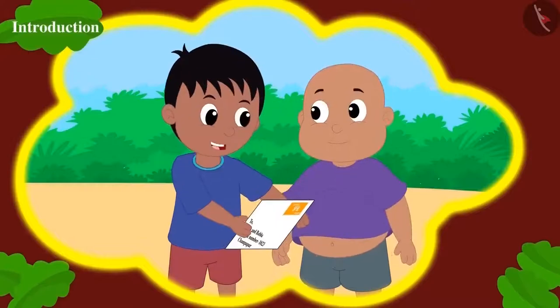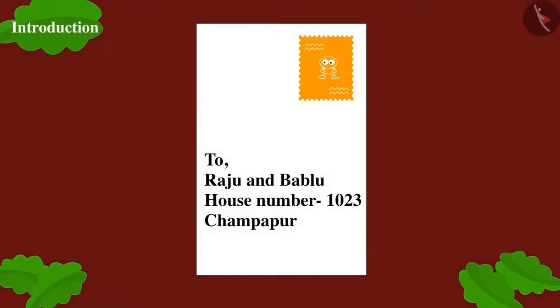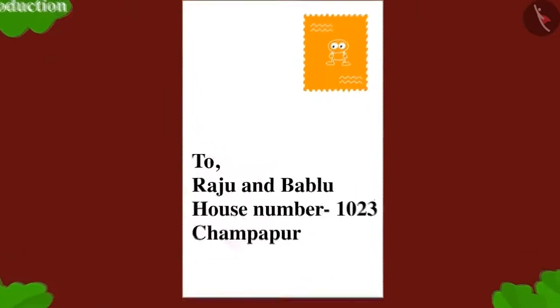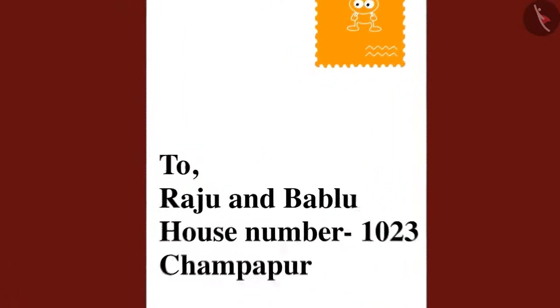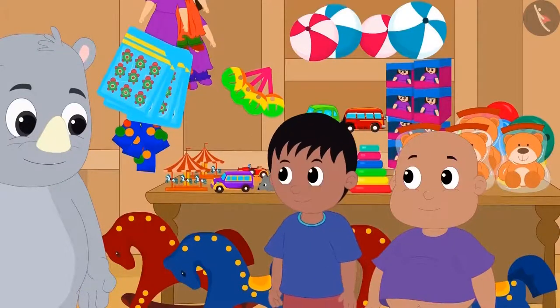Raju and Bablu have received a letter from Jeev today. The letter says that Jeev is coming to their house to celebrate Diwali along with his friends. Raju and Bablu have come to Gaggu's cracker shop to buy some firecrackers.